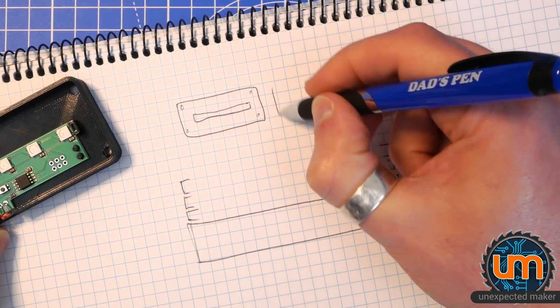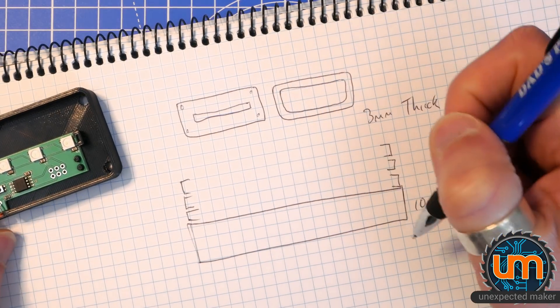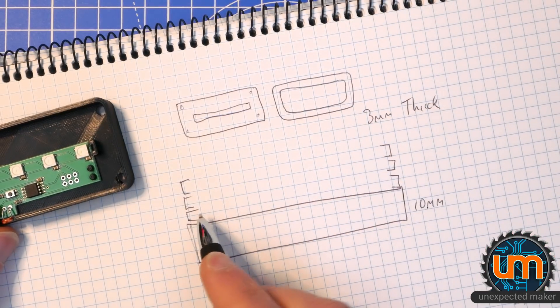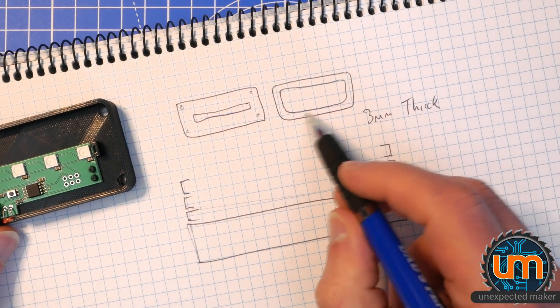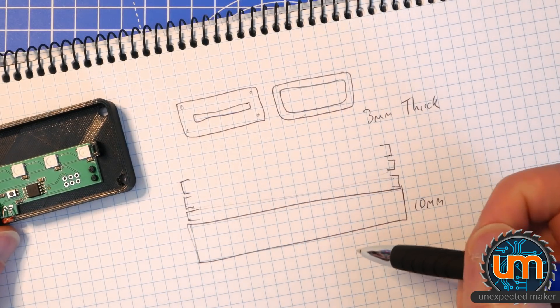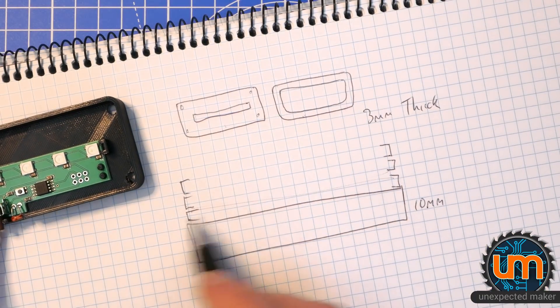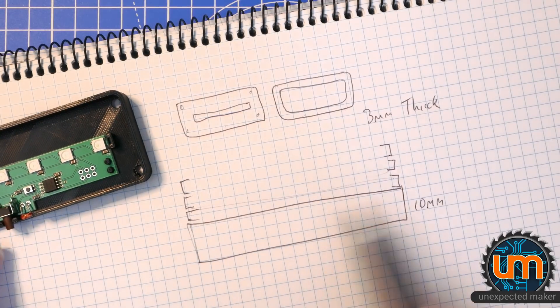For the middle two I'll do a shell, just an outline. The reason I'm doing that is obviously I want to have it all open inside. I don't want to block the light off. So the top I'm going to do in black, I'm going to do one of these in black and one in clear. That way I'll have the option of putting a clear piece in and seeing the light from the side as well.